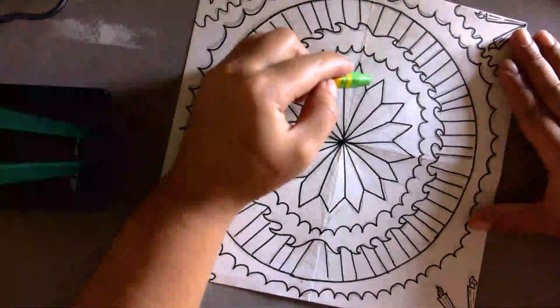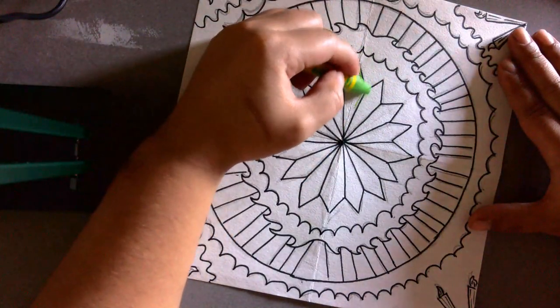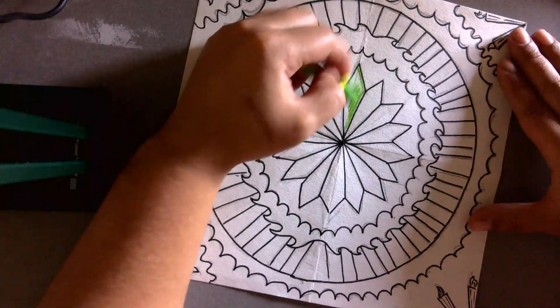Like I mentioned, the thing in the middle is a succulent. So I'm going to use the greens to fill it in.